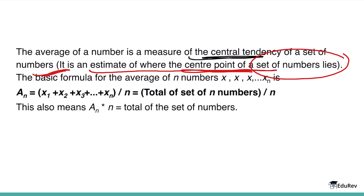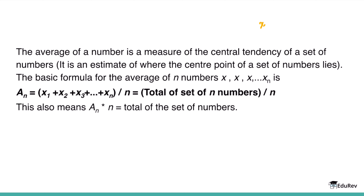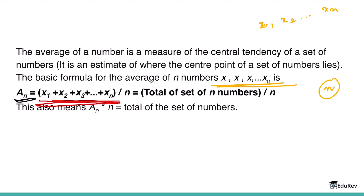Now what is the basic formula for averages? If there are n numbers — let's say x1, x2, up to xn — the average is the summation of all these numbers divided by the total count of numbers.